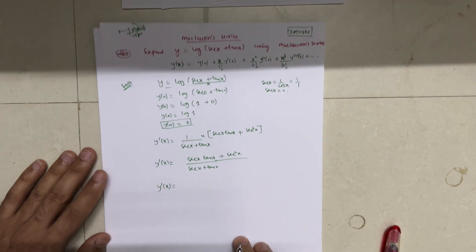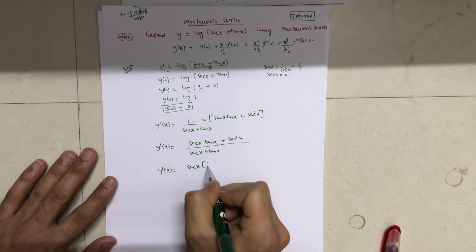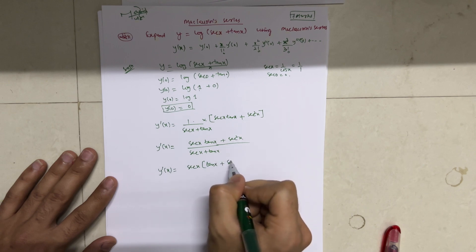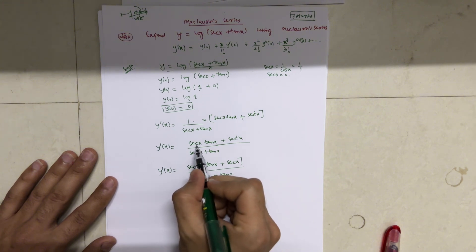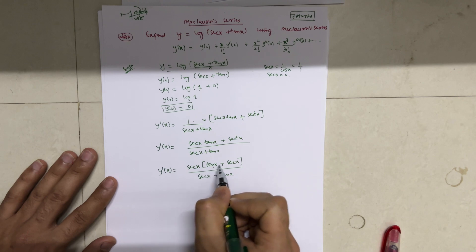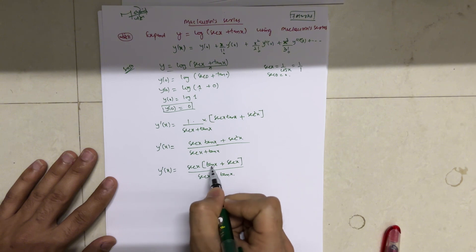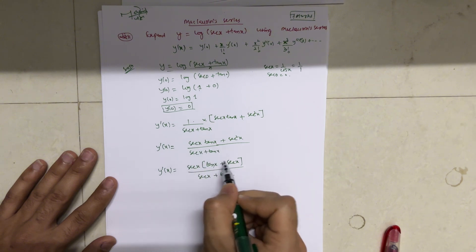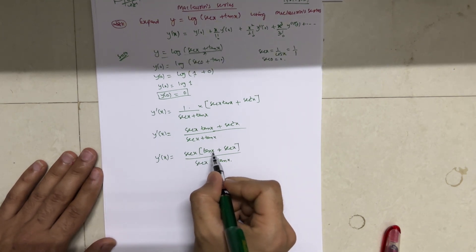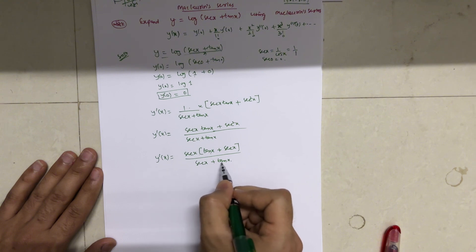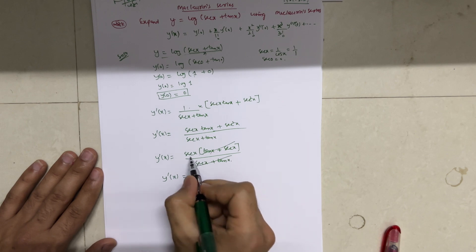We can factor sec x from the numerator: sec x(tan x + sec x) divided by (sec x + tan x). Since (tan x + sec x) and (sec x + tan x) are the same, they cancel, giving y'(x) = sec x.